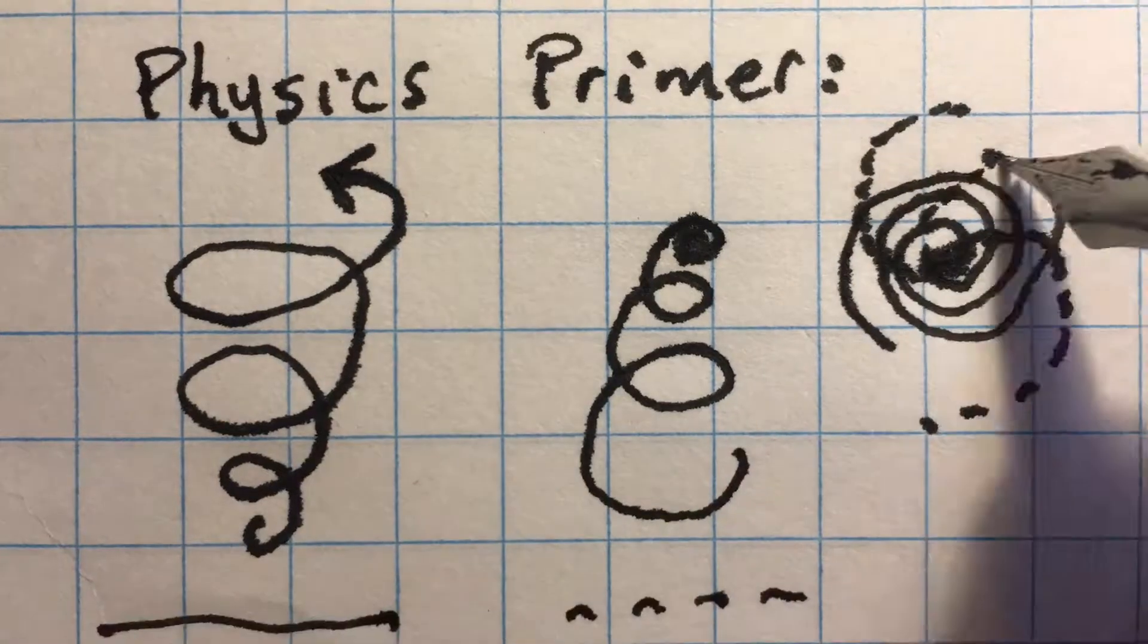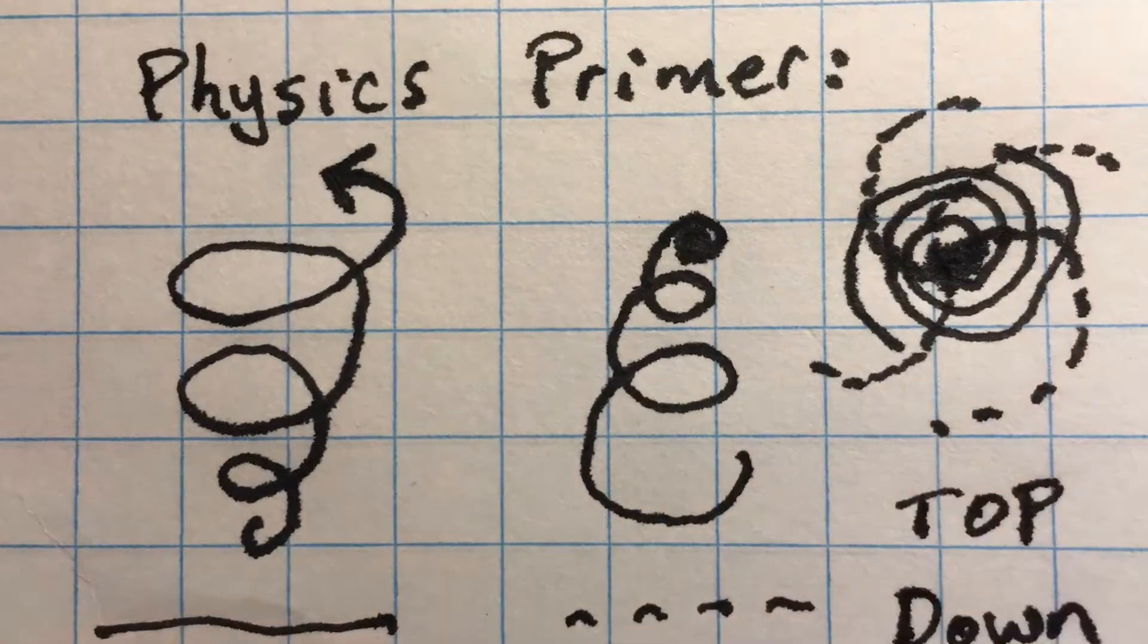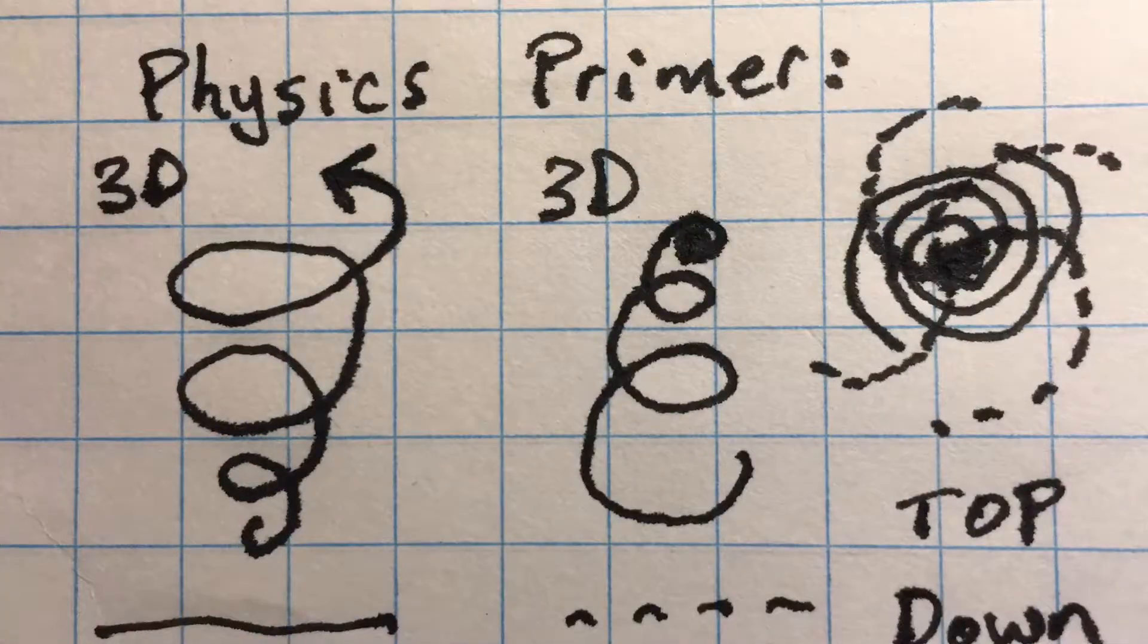Centrifugal divergence and centripetal convergence form a reciprocating processional hyperboloid.